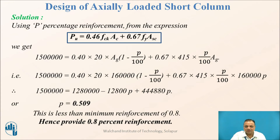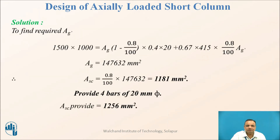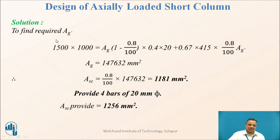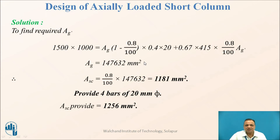We now find the actual area required. If we calculate the gross area corresponding to 0.8% steel, it works out to 147,632 mm². This indicates the actual required area is 147,632 mm², whereas the provided area is 16 × 10⁴ mm², meaning the provided area is more.